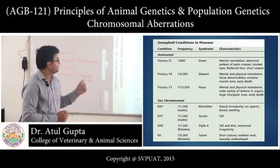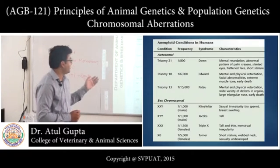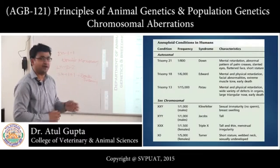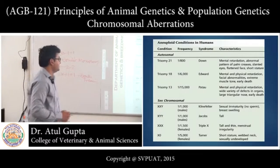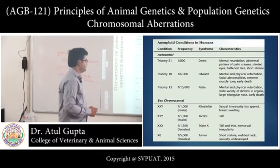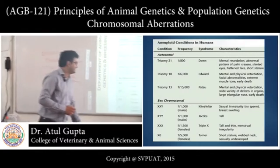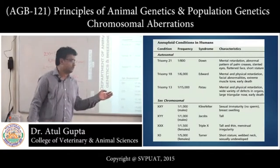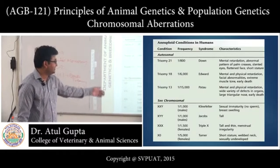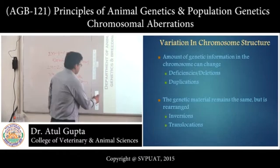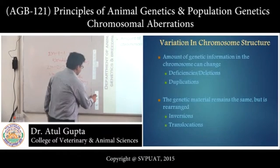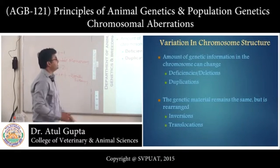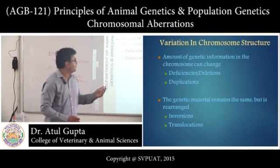Aneuploid conditions in humans include: trisomy of the 21st chromosome (Down syndrome), trisomy of the 18th chromosome called Edwards syndrome, and trisomy of the 13th chromosome called Patau syndrome. Sexual chromosomal trisomies include XXY, which leads to Klinefelter syndrome, among other syndromes.